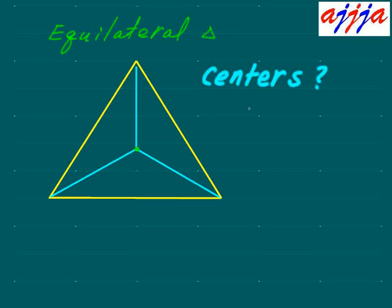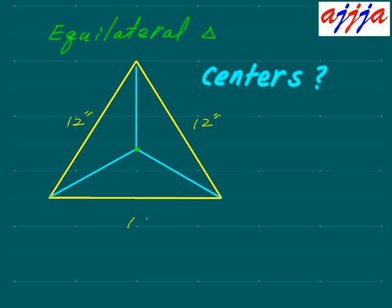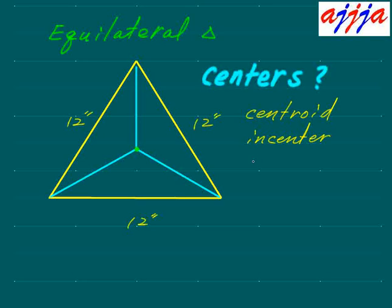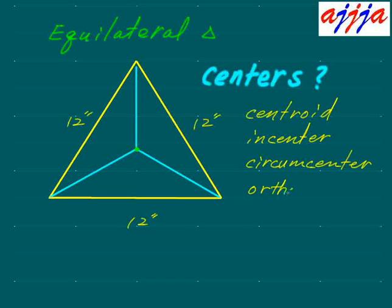How many different types of centers do we have in an equilateral triangle — that means all sides are the same. Let's say all three sides are 12 inches. We have four different types of centers: the centroid, the incenter, the circumcenter, and the orthocenter.